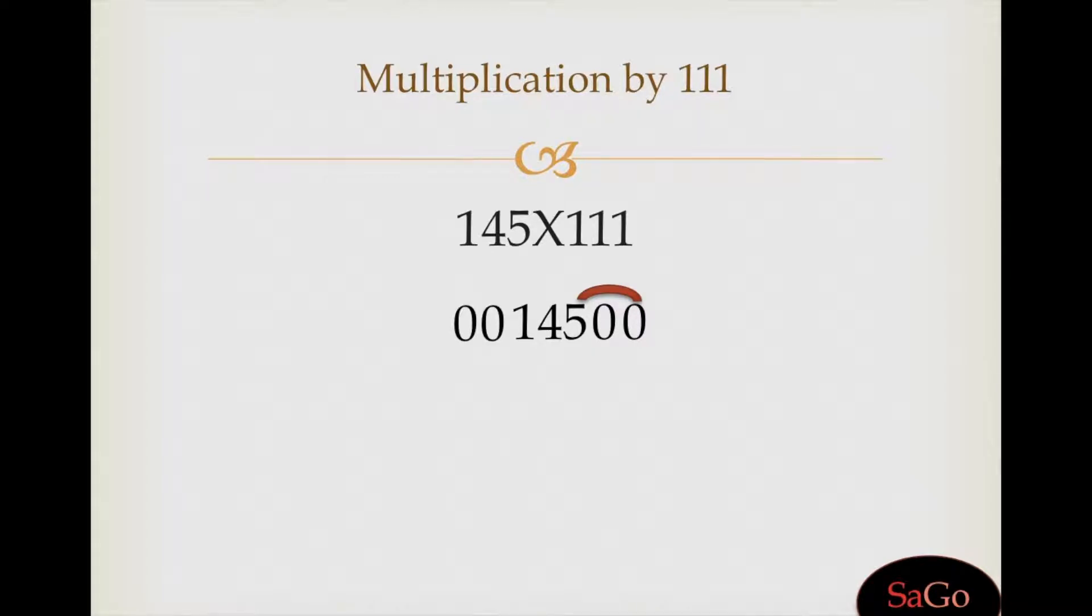Now all we need to do is pair up the digits in groups of three. Zero plus zero plus five is five, write five. Zero plus five plus four makes nine, write nine. Five plus four plus one is ten, but we cannot write down ten. We'll write zero and one for the carryover.